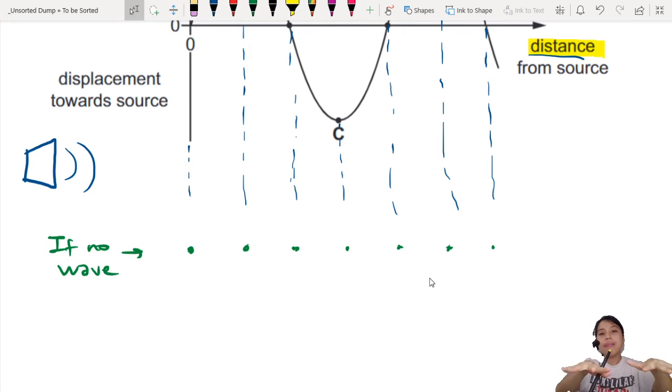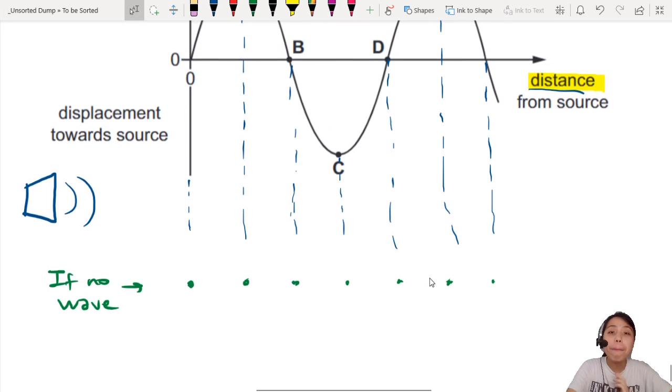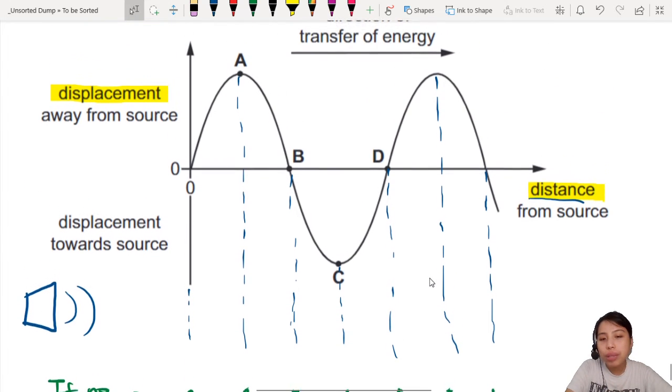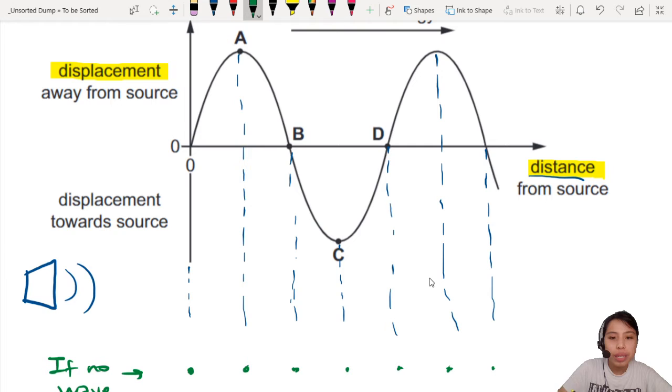But now if you notice, all the particles are going to have a displacement either towards the source or away from the source. It looks like away from the source is positive. Everything above the origin is positive. That's away. Towards the source is negative because it's below the x-axis. So let's call that negative. So how we draw these points?